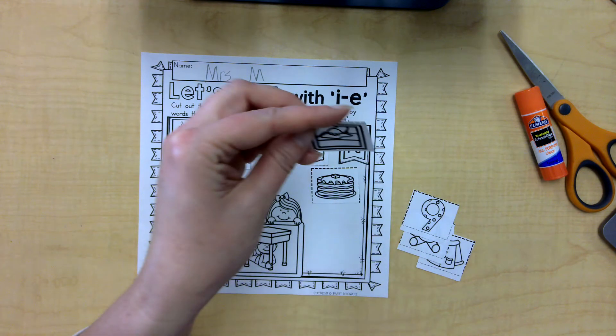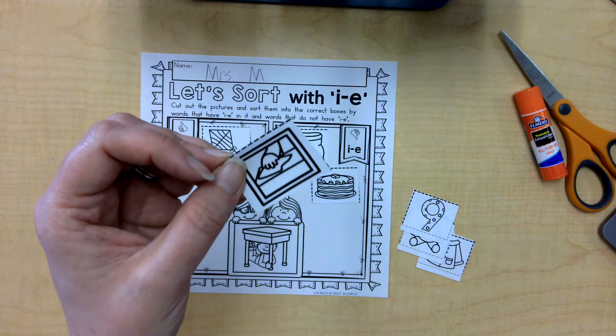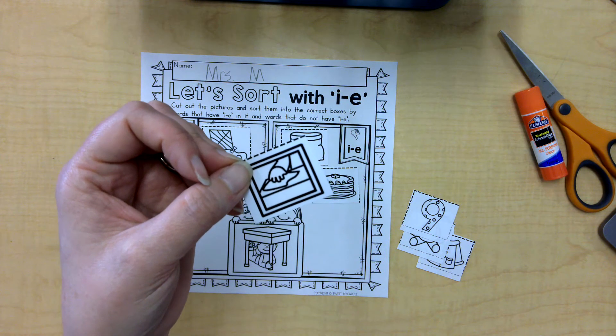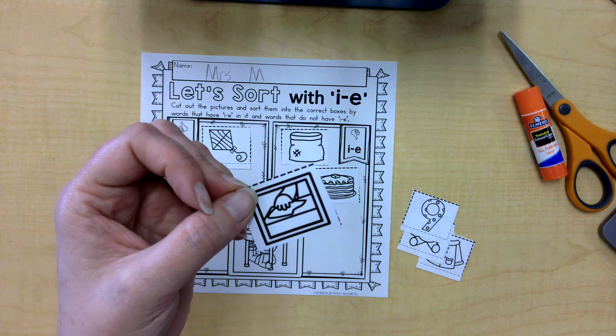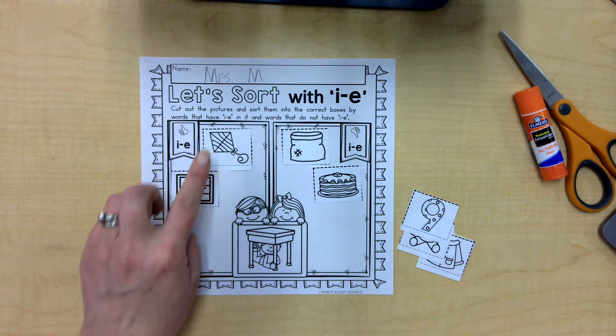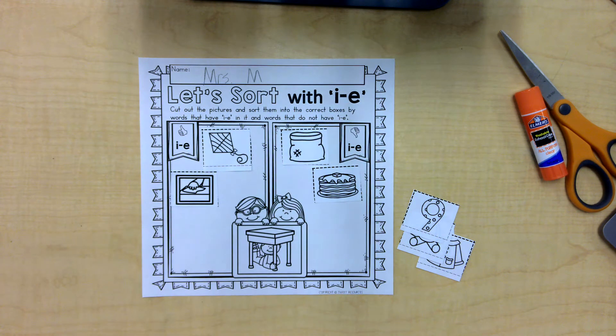Hmm, this is, oh, he's wiping the table. Wipe. W-I-P. Do you hear superhero I? I do. W-I-P. Kite. Wipe. Alright friends, you're going to keep on sorting on your own.